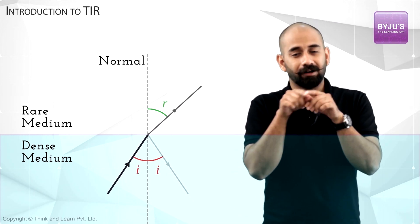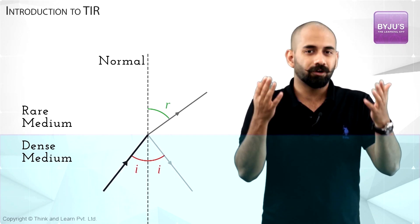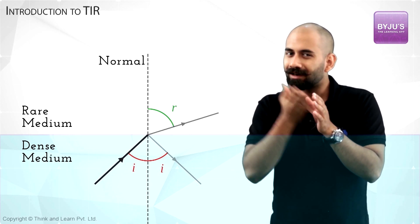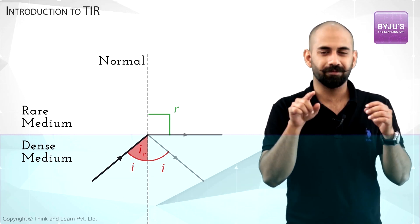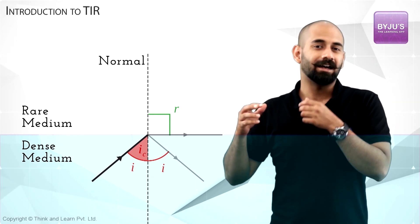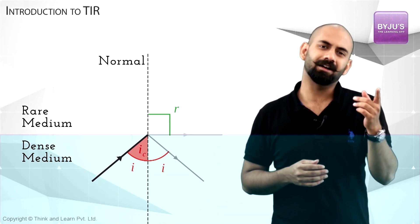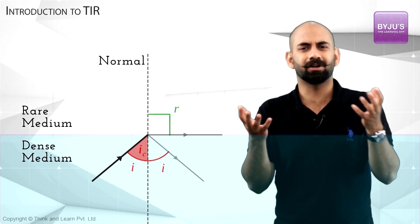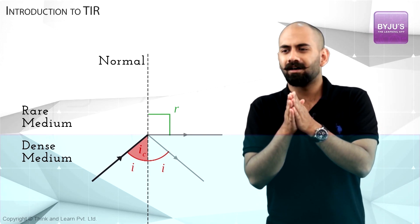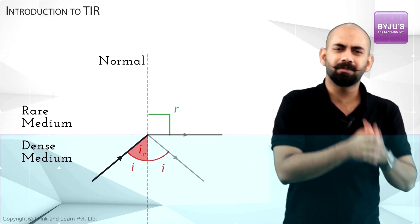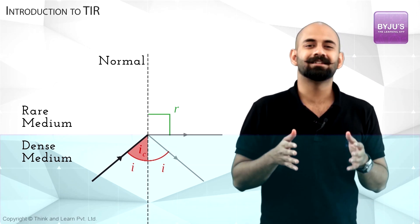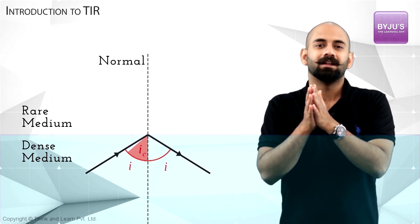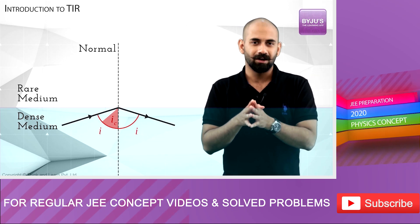At a particular angle, when I increase the angle of incidence to a specific value, the refracted ray makes an angle of 90 degrees to the surface. Now if I increase the angle of incidence even beyond this, what will happen to the refracted ray? It cannot come back into the same medium, because that's not refraction — refraction is defined as light bending when it travels from one medium to another. So what actually happens is: once you increase the angle of incidence beyond that particular angle, there is no refraction — only reflection takes place.